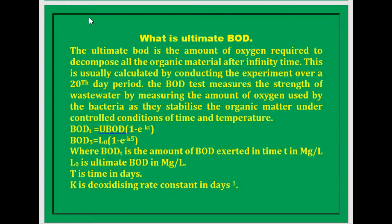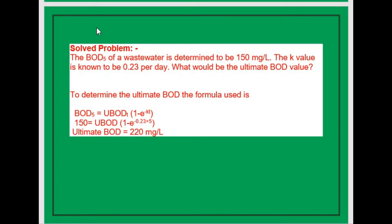The BOD test measures the strength of wastewater by measuring the amount of oxygen used by bacteria as they stabilize the organic matter under controlled conditions of time and temperature. The formula used is: BOD equals ultimate BOD multiplied by (1 minus e to the power of minus KT), or BOD5 equals L0 (ultimate BOD) multiplied by (1 minus e to the power of minus 5K). Where BOD is the amount of BOD exerted in time T in mg/L, L0 is ultimate BOD in mg/L, T is time in days, and K is the deoxygenation rate constant per day.